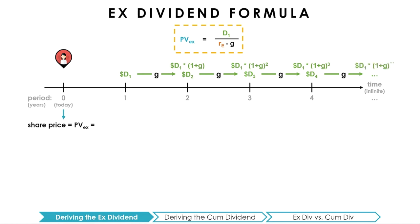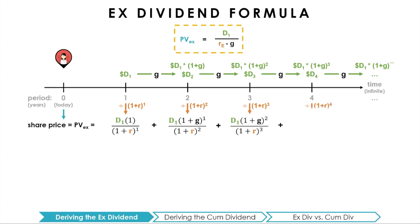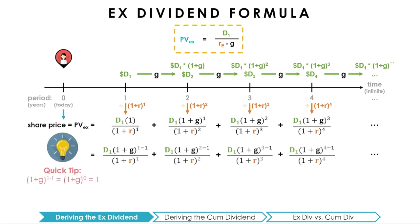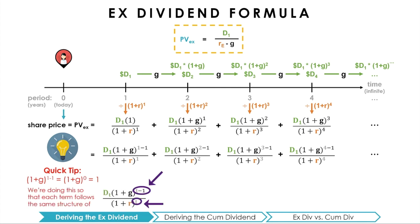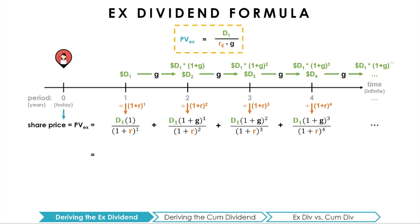Since the stock price reflects the present value of all the dividends, these future dividends are discounted back to today at the cost of equity RE. From here, we can see a pattern: each dividend term is multiplied by (1+G) to the power of one less the time period in the numerator, and (1+R) to the power of the time period in the denominator. If we factor out D1, we can more clearly see this sequential pattern.